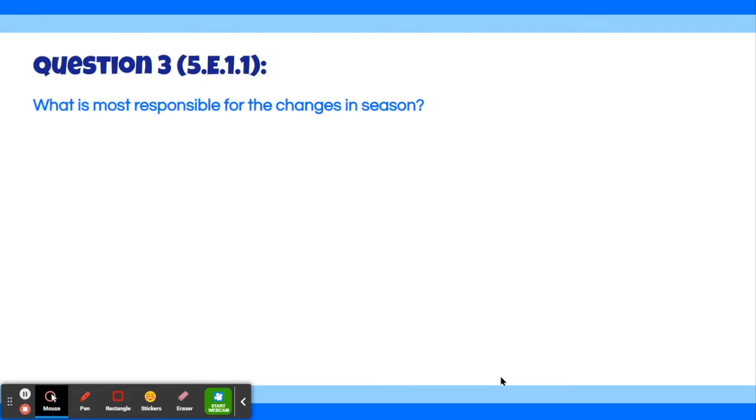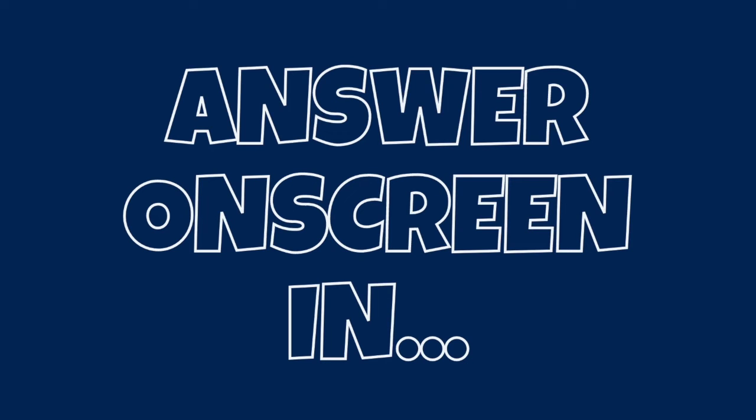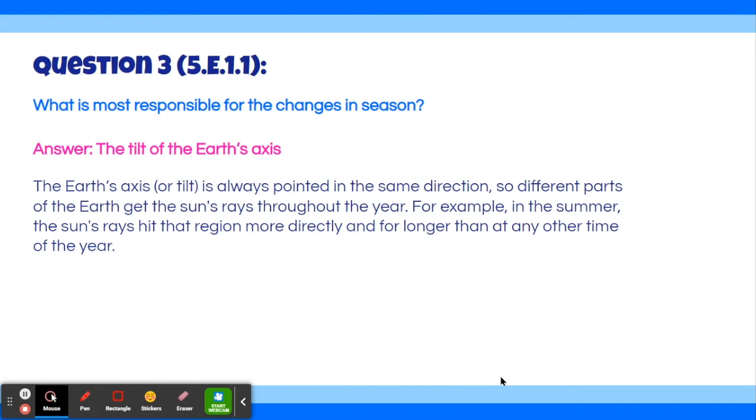Okay, question number three. What is most responsible for the changes in season? The answer is the tilt of the Earth's axis. The tilt of the Earth's axis is always pointed in the same direction, so different parts of the Earth get the sun's rays throughout the year. For example, in the summer, the sun's rays hit that region more directly and for longer than any other time of the year.